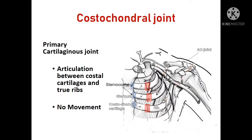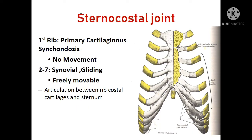The costochondral joint is a primary cartilaginous joint — the articulation is between the costal cartilage and the rib; there is no movement. The sternocostal joints: the first rib with the sternum is a primary cartilaginous joint (synchondrosis) with no movement. Between the second to seventh ribs, it is a synovial, freely movable joint.